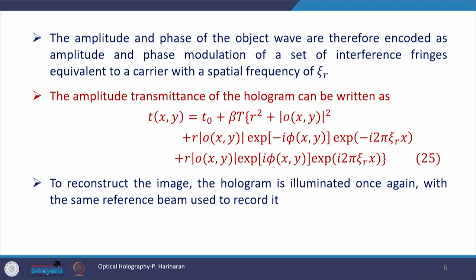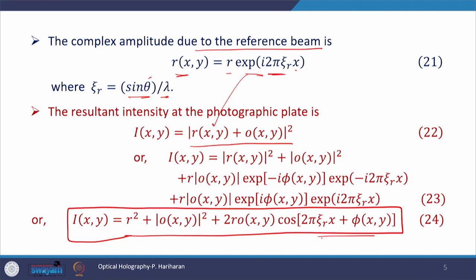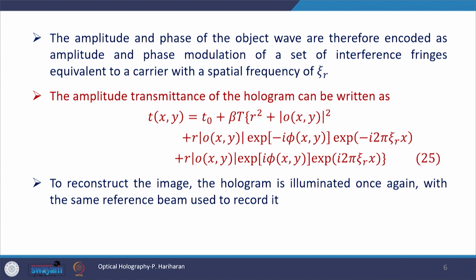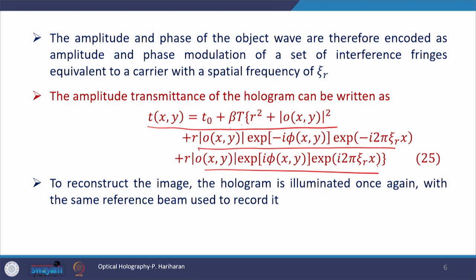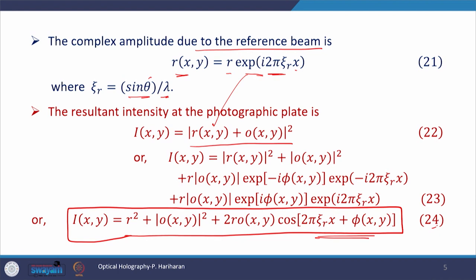The amplitude and phase of the object wave are therefore encoded as amplitude and phase modulation of a set of interference fringes equivalent to a carrier with spatial frequency psi_R, which is evident from equation 24. Following a similar analysis to the inline hologram case, the amplitude transmission is expressed as t equal to t_naught plus beta_t times I, where t_naught is the background transmittance. Substituting I from equation 24 gives the detailed expression of equation 25. The intensity I is replaced by equation 24 in this expression.